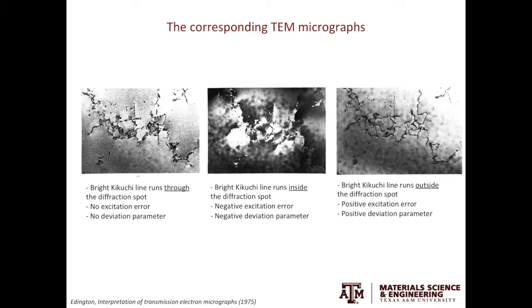For the micrograph in the middle, that's when you have the bright Kikuchi line going through the inner part of the diffracted beam. This gives you the worst dislocation imaging condition out of the three. The reason you see darker matrix is because when you set the excitation error into negative, you actually tilt the matrix closer to the Bragg's condition. This will lead to a lower intensity of the direct beam from the matrix, thus leaving a darker background.